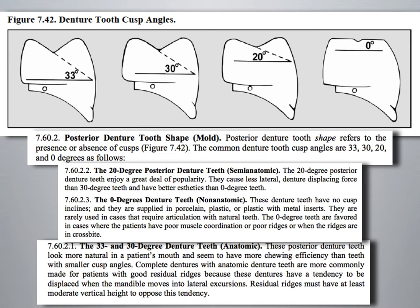Let's talk about our posterior teeth and how they work in terms of function. Posterior denture tooth shape, also known as mold, refers to the presence or absence of cusps. The common denture tooth cusp angles are about 33, 30, 20, and 0 degrees.